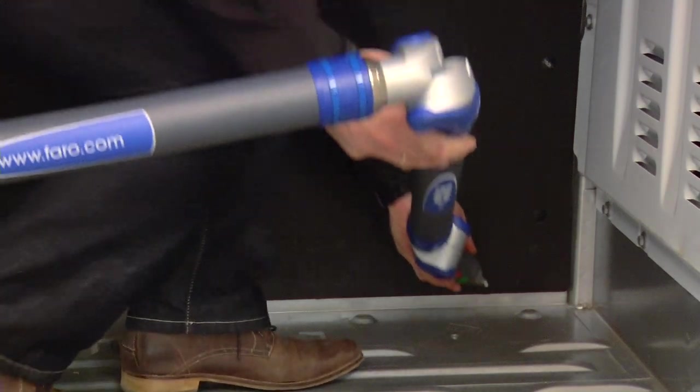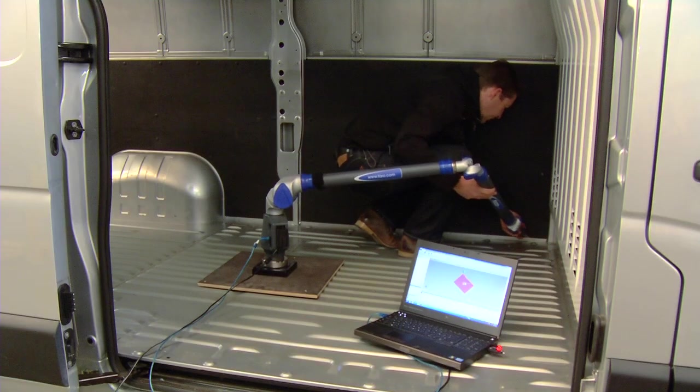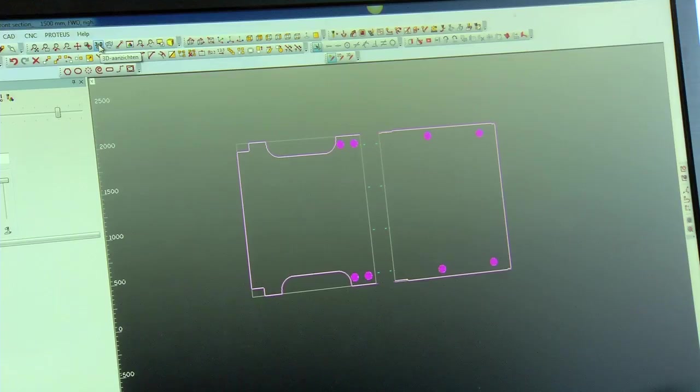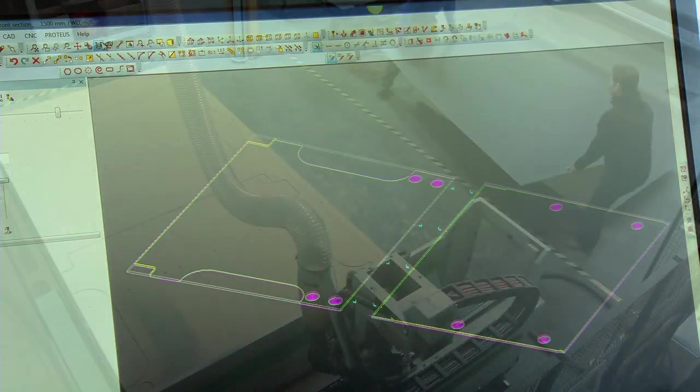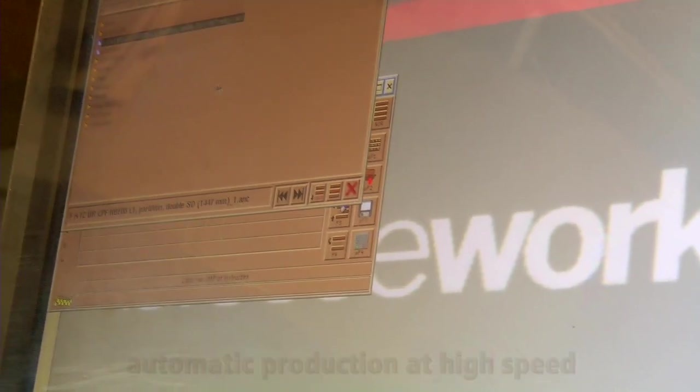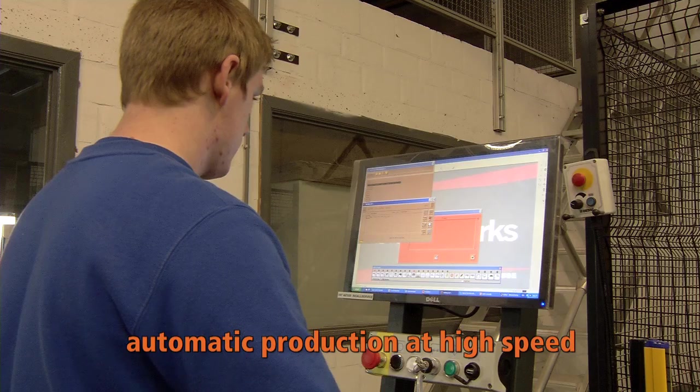The measuring probe records each deviation from the straight line and relays this data to our CAD system. The exact drawing of the product is then passed directly to the CNC machine, which produces the desired panel completely automatically and at high speed.